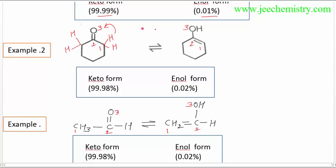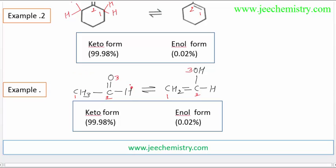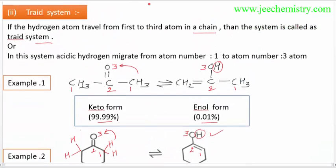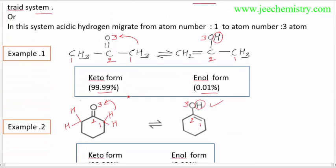Here this hydrogen migrates to atom number three — hydrogen comes here — so this is called the triad system. In the diad system, the atom migrates from atom number one to atom number two, meaning two atoms are involved. In the triad system, three atoms are involved in the migration of hydrogen atoms. This is the key difference between the diad and triad systems.